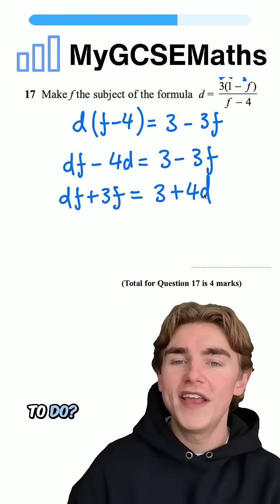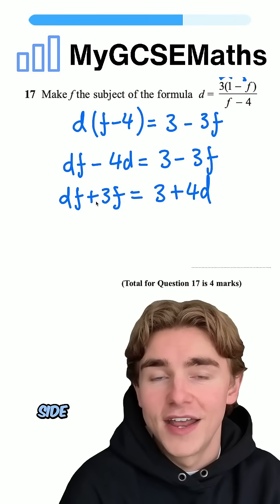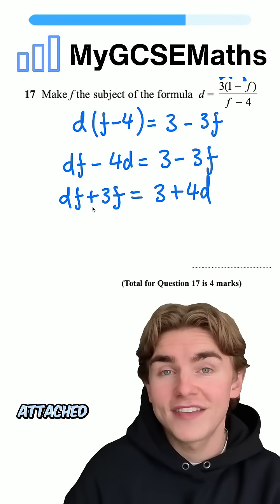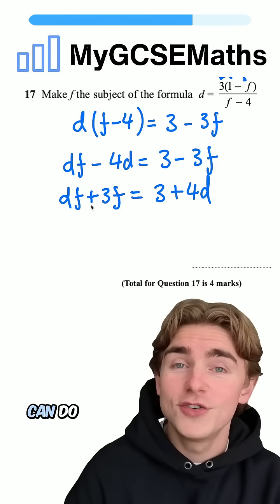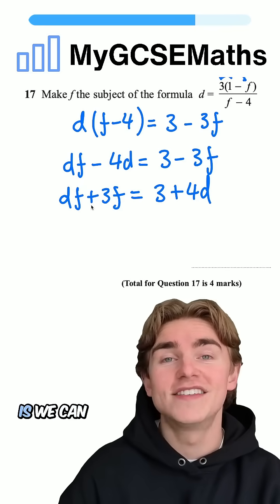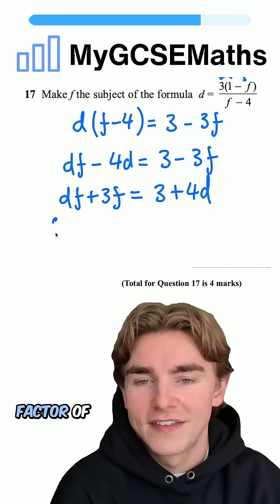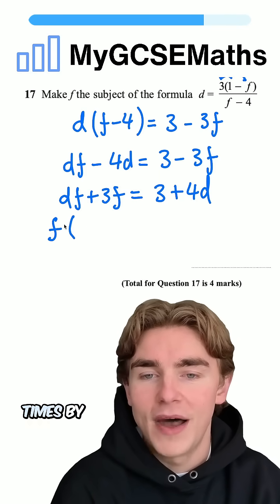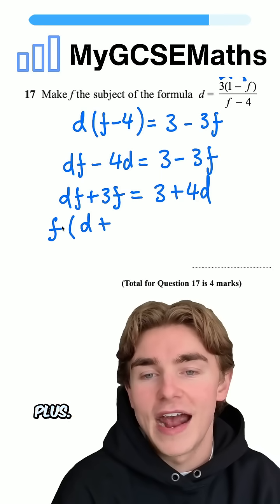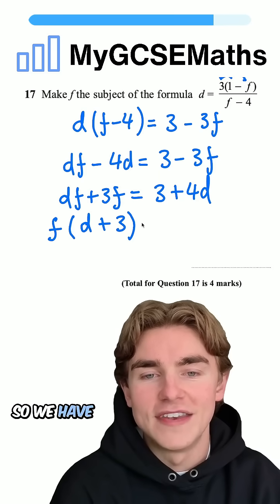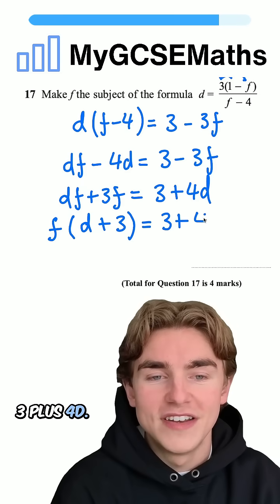We can see that we have df and three f on the left-hand side. Because one term has a letter attached and the other has a number attached, we can't combine them directly, but we can factorize by pulling out a factor of f. So we write f times d plus three on the left, and that equals three plus four d on the right.